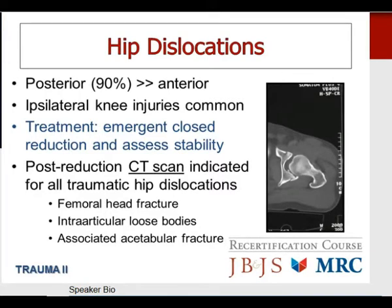Moving on to hip dislocations: posterior dislocations are much more common than anterior because of the mechanism of injury. Ipsilateral injuries to the knee are quite common in association with hip dislocations. Treatment is emergent closed reduction followed by clinical assessment of hip stability post-reduction. A post-reduction CT scan is indicated for all traumatic hip dislocations to look for intracapsular injuries: femoral head fracture, intra-articular loose bodies, and associated acetabular fracture.